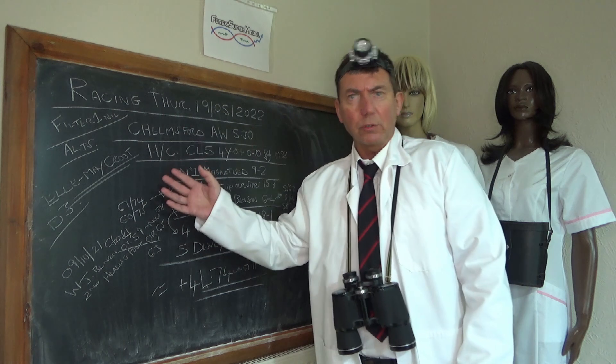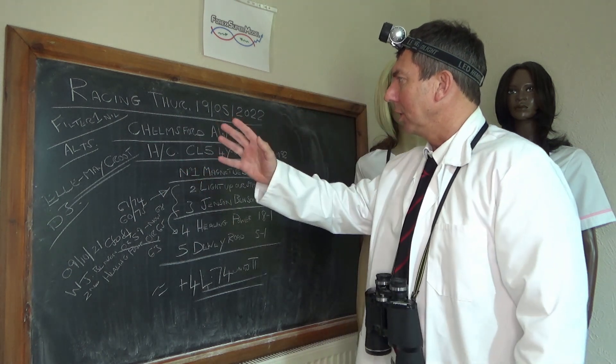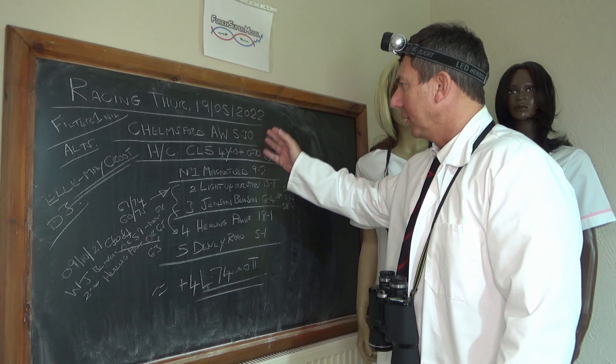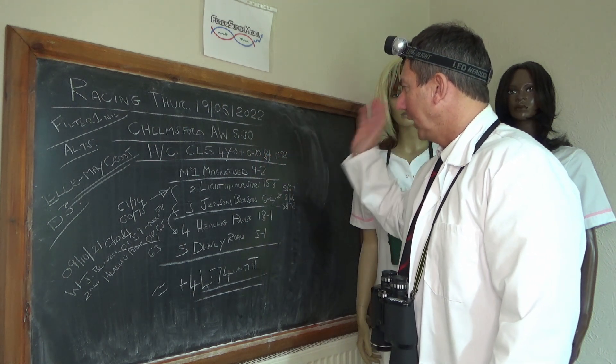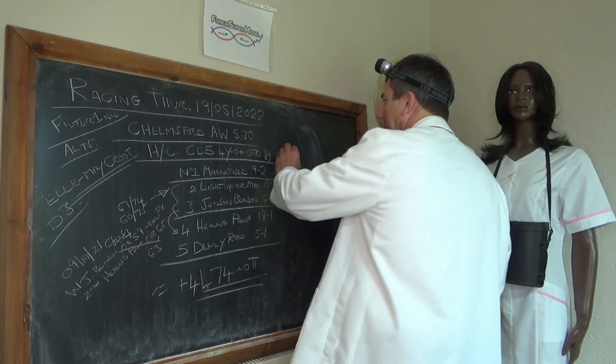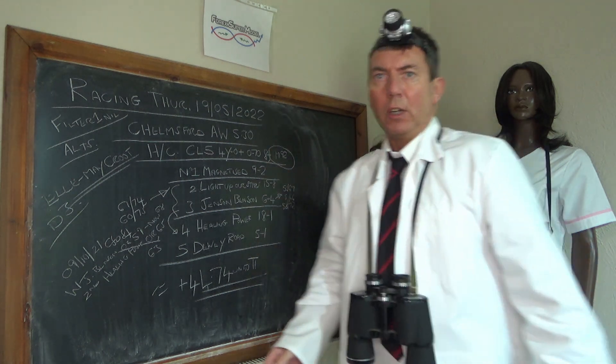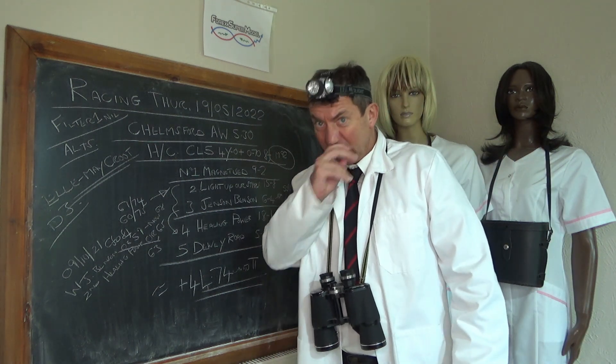We've got no filter one, which is our structure filter. Get those occasionally but not at the moment. We've got an alternate though at Chelmsford on the all-weather at 5:30. It's a handicap class 5, 4-year-old plus, 78 furlongs, modeled at about 92, so it's on the slow side as far as we're concerned.